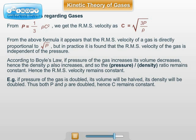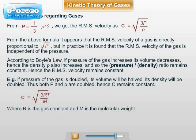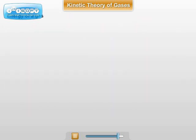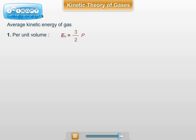For one mole of an ideal gas, the RMS velocity is given by C = √(3RT / M), where M is the molecular weight of the gas. From the formula P = (1/3) ρ C², many things can be obtained, such as verifying Boyle's law, and deriving the average kinetic energy per unit volume EV = (3/2) P, or average kinetic energy per mole EM = (3/2) RT.